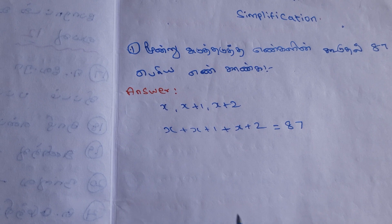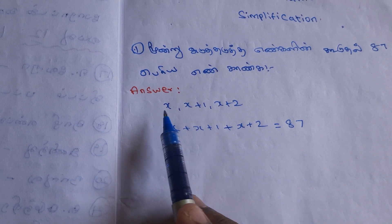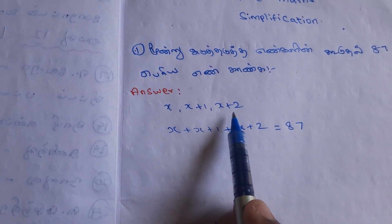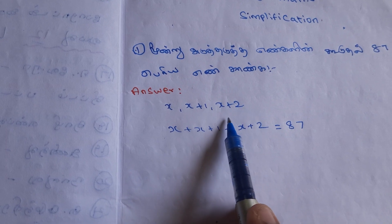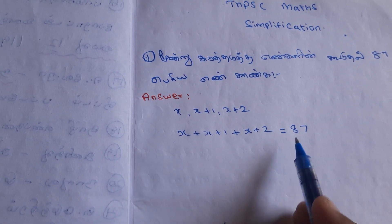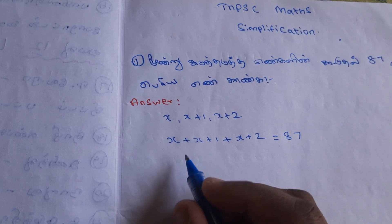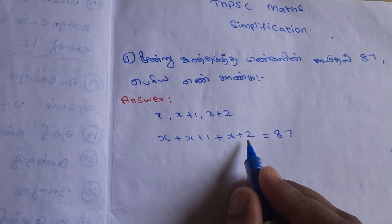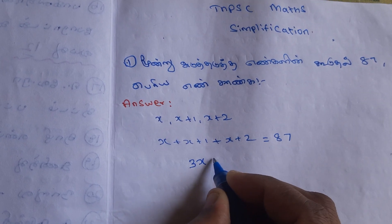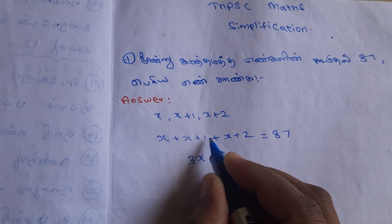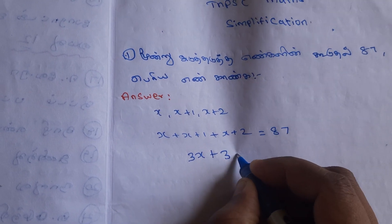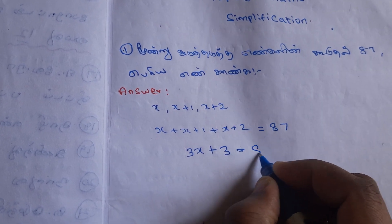First, we show how x is drawn. We want to show how x is drawn and apply the x value. When the value is set up, x plus 2 is identified. If there are 3x, then 3x plus 1 plus 2 plus 3 is equal to 87.